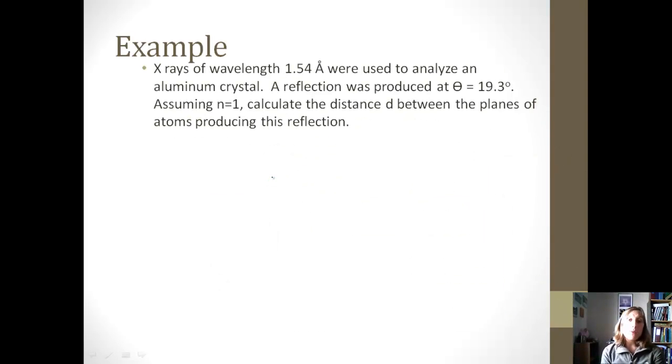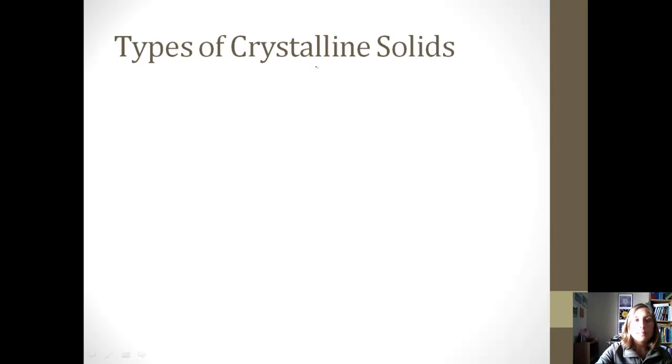So using the Bragg equation, try this example. We have an x-ray of a wavelength of 1.54 angstroms. And so we have a reflection produced at 19.3 degrees. We're going to assume n equals 1 because n is just an integer, and we want to calculate the distance between the planes of atoms producing this reflection. So take your Bragg equation from the previous slide, plug in, and maybe you want to go ahead and pause the video for a few minutes, try this. Hopefully you got an answer of 2.33 angstroms. So that just gives you the distance between the planes of the atoms.